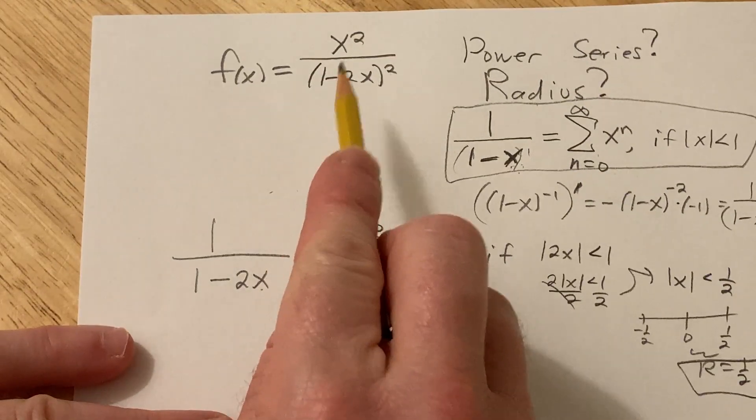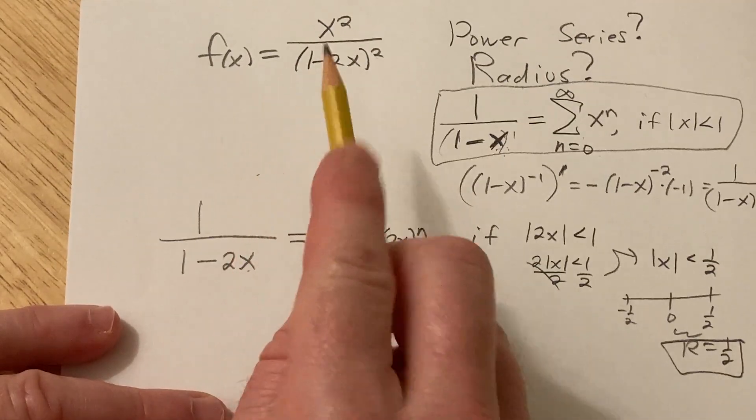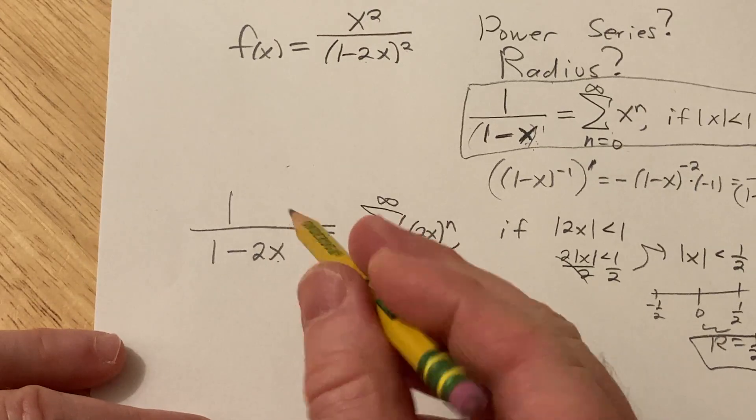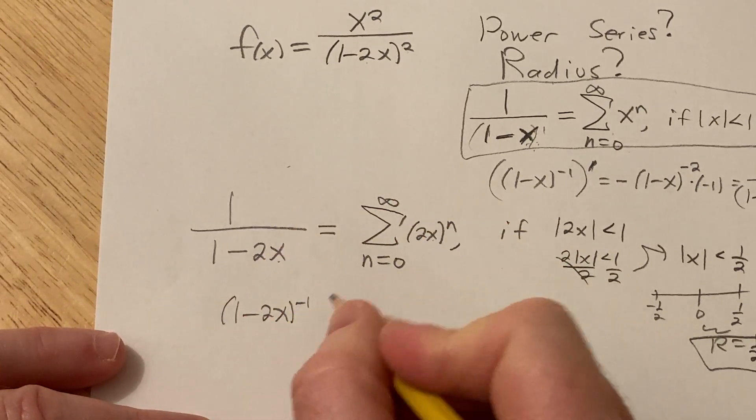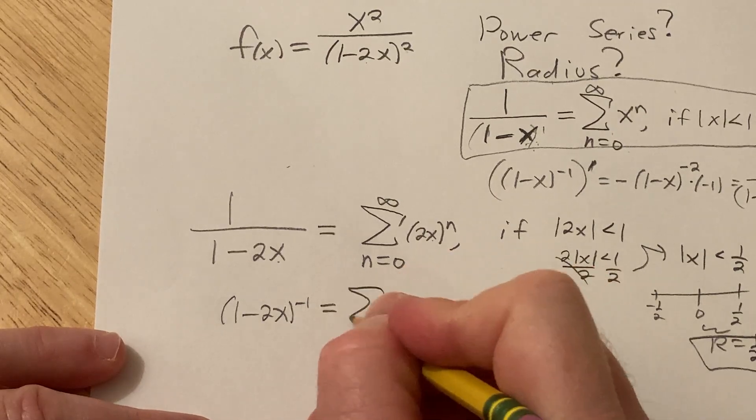So now we need to get this thing. That's our goal, right? We want a power series for this. So let's go ahead and differentiate this. I'm going to write it like this. 1 minus 2x to the negative 1. And I'll go ahead and write this one again.